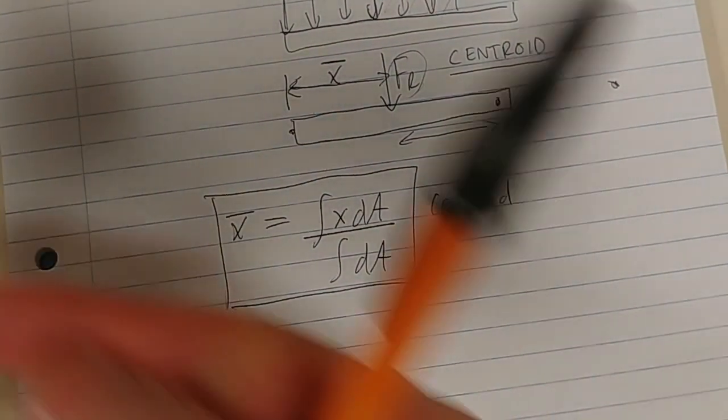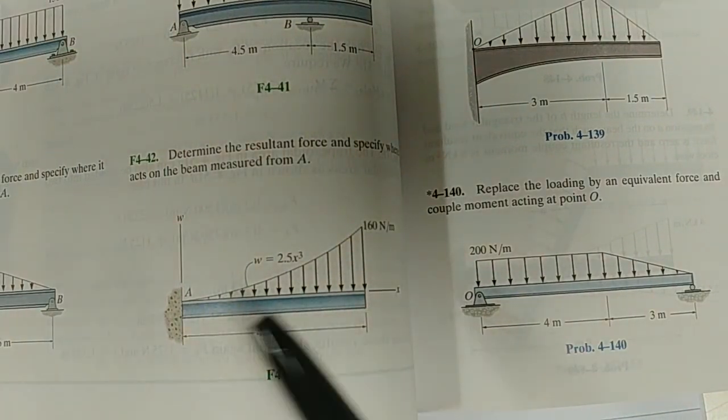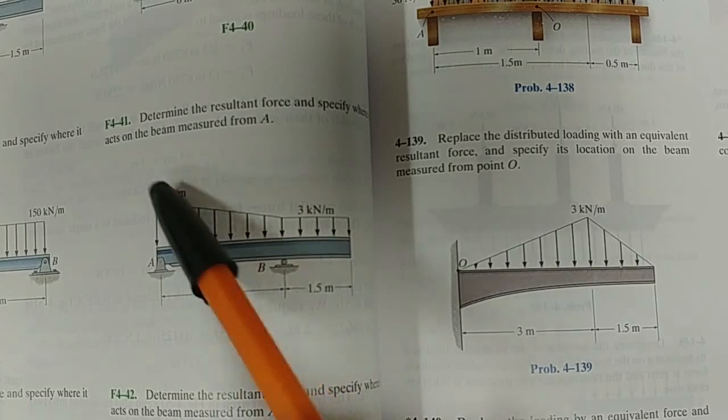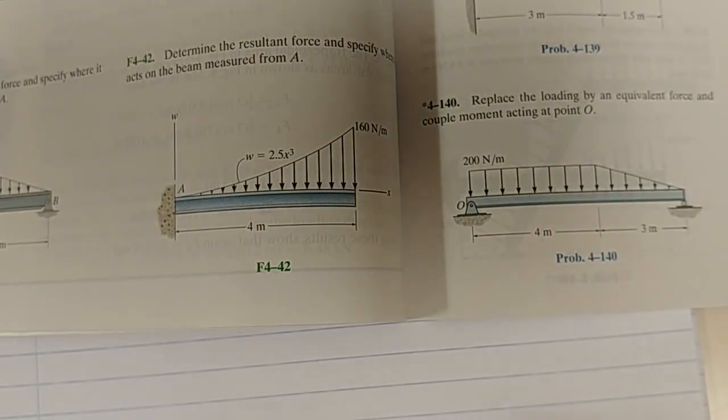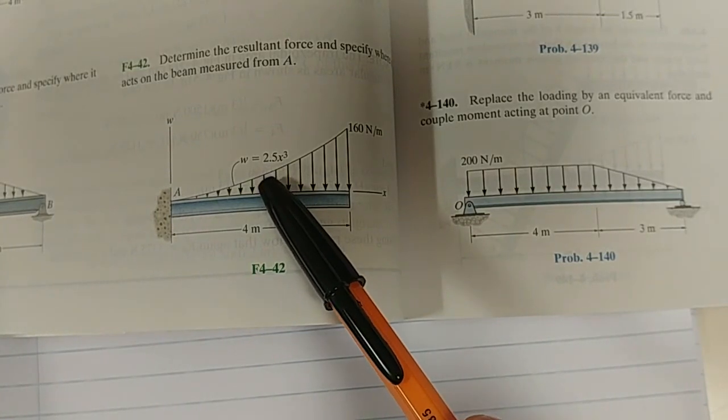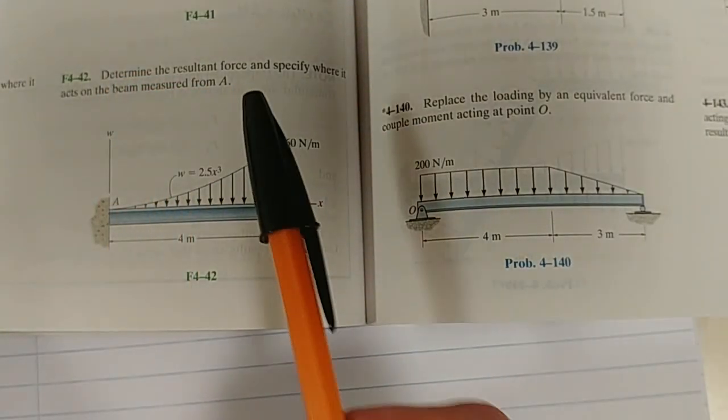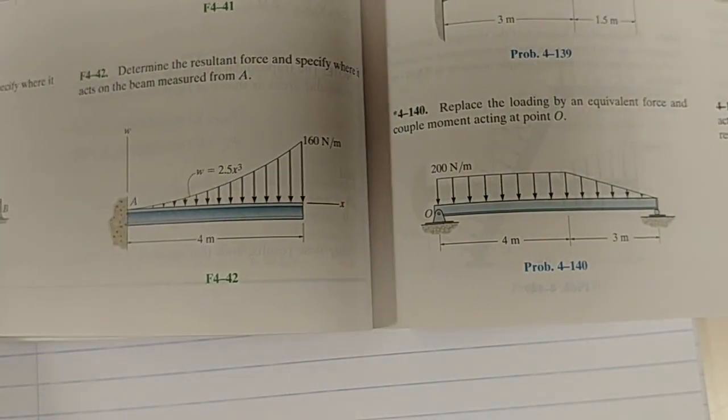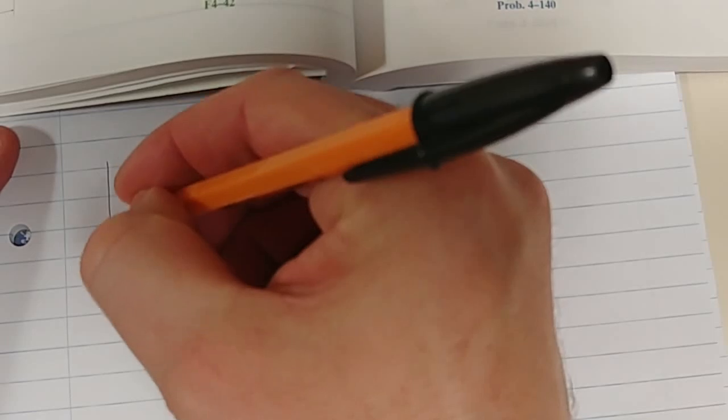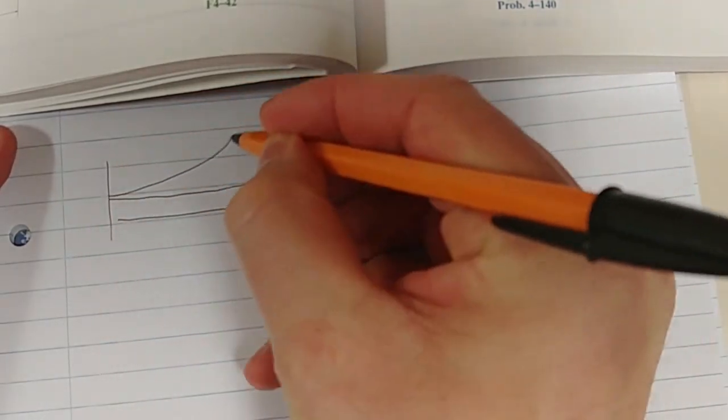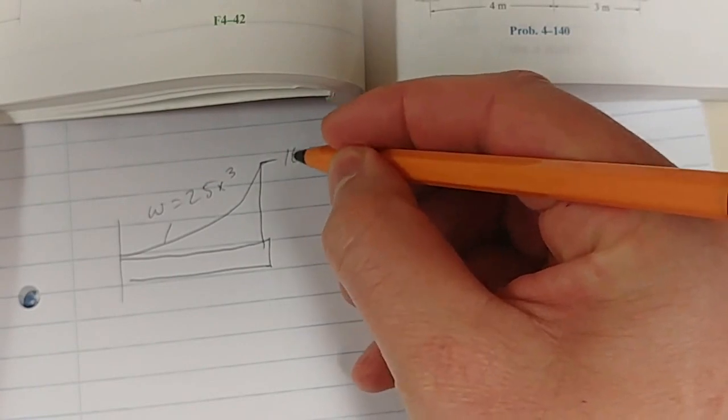Let's look at F4-42. I know the solution is in the back but I just chose this because it's one of the few ones that doesn't have a conventional shape like a triangle or a square. This is slightly more tricky but not really. Here we have our distributed load 2.5x³ and the maximum value of that loading is 160 Newton per meter. Determine the resultant force and specify where it acts on the beam measured from A. Let's put this down here.